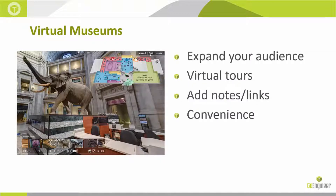The next category is virtual museums. This is a pretty cool application because it can expand your audience to anybody that has access to the web. The image here was taken from the website for the Smithsonian Museum of Natural History in Washington, D.C., and they pretty much have their entire museum on their website. You can take a virtual tour, click on an artifact and get a description just like a tour guide would, add notes, and access links to further reading — all from the convenience of your computer. There were a lot of different 3D scanning technologies used to create this, but it serves as an example of what's possible with 3D scanning.